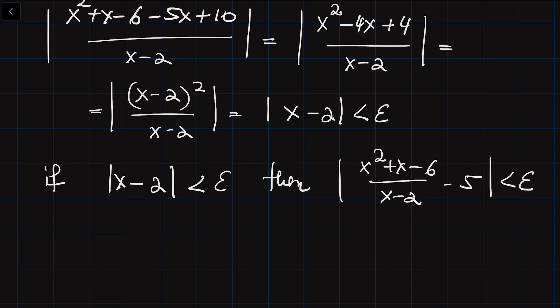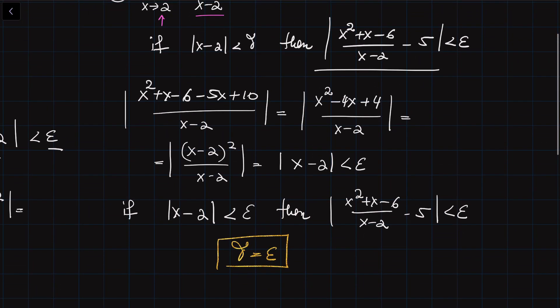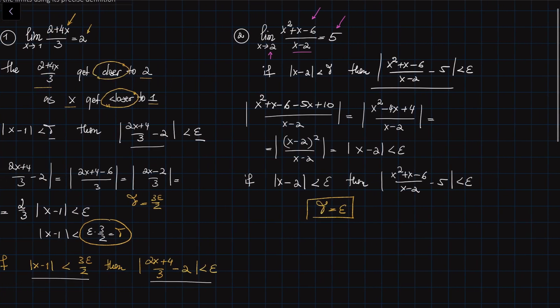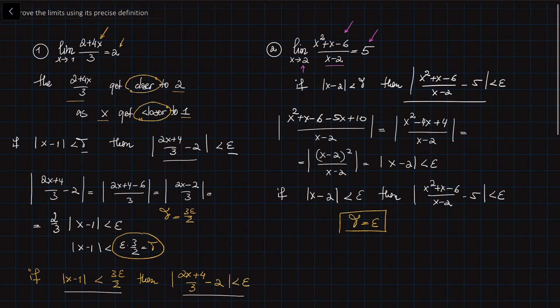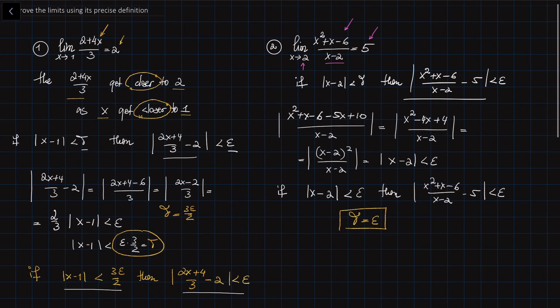In this case, our delta is simply equal to epsilon. When proving limits using the precise definition, what you need to do is derive the equations that connect epsilon and delta. In our next video lecture, we are going to show how to prove that a limit doesn't exist using the precise definition. Thank you very much, I hope this was helpful for you.